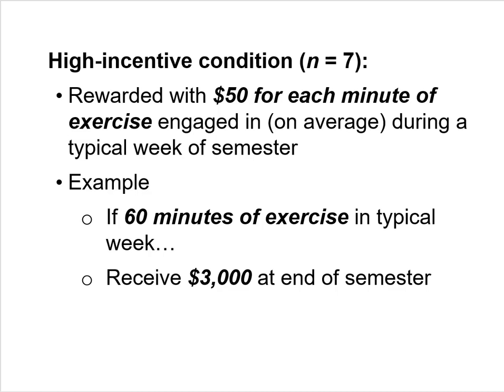Finally, the remaining seven participants are assigned to the high incentive condition. They're told they'll be rewarded with $50 for each minute of exercise they engage in on average during a typical week. For example, if a participant engages in 60 minutes of exercise per week, they'll receive $3,000 at the end of the semester — that's why we call it the high incentive condition.